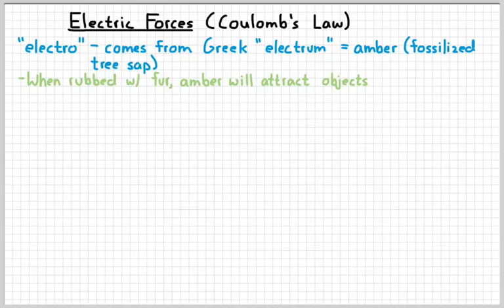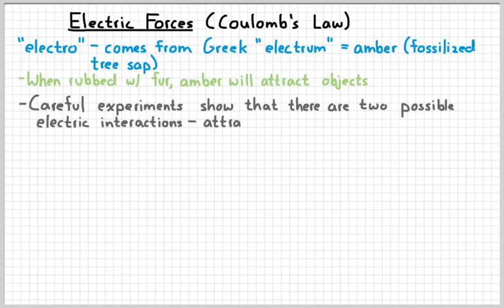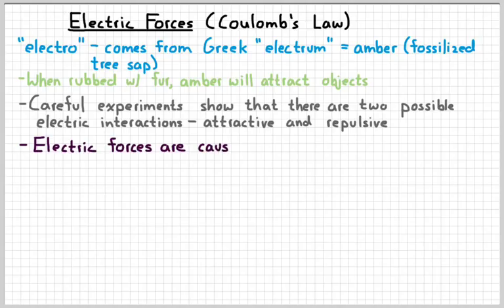So it was a very long time before anybody actually ever understood anything about these forces. Many years later, careful experiments were done by a few people that show that there are two possible electric interactions. Electric interactions can be both attractive and repulsive. So the basic idea and our place to begin with is that electric forces are caused by things called charge. Charge is a fundamental property of nature. So that's the first thing we need to learn about, electric charge.